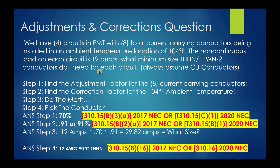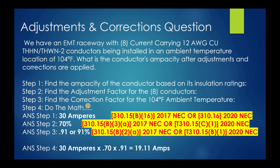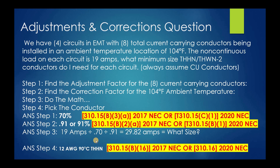Now there are some steps to go through to solve this. In the previous example, we already started with 12 gauge and went to Table 310.15(B)(16), starting with the 30 amps under the 90-degree column and using multiplication to work our way down. This is a little different — we're going to use division because we're given the actual load, and we'll work our way up, applying adjustment and correction factors to determine what conductor we need to find in the 90-degree column.